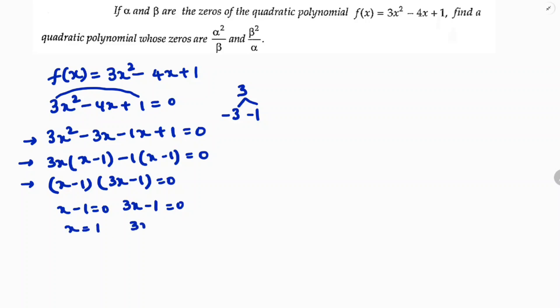So x = 1. 3x = 1, so x = 1/3. So if you consider alpha as 1, then beta will be 1/3. So you got alpha and beta.